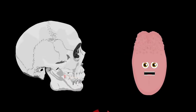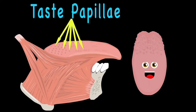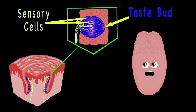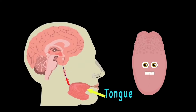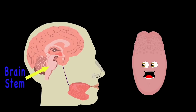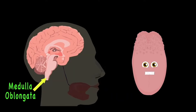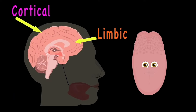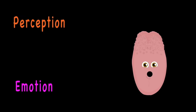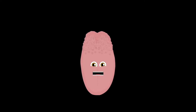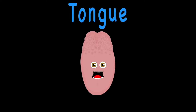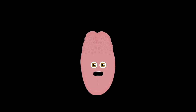When you bite into your food, the chemicals from foods release and sink into the taste papillae to the taste buds that run deep. Sensory cells transform chemicals into nerve signals that are sent to the brain through nerve fibers. When the signals reach your brain, that information is passed through your cranial nerves to the brainstem really fast. Your medulla oblongata takes all those signals and sends them to the limbic and cortical systems. Perception and emotion are then formed from what you ate, then mixed with smells and texture — which creates this thing called taste.